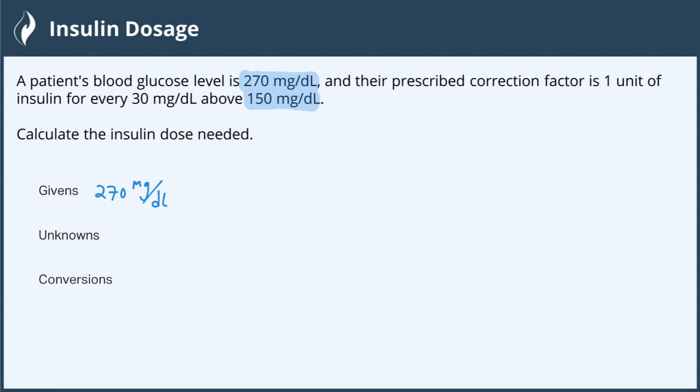So here, we have to figure out how much above 150 milligrams per deciliter our 270 is. So we subtract that from 270 to find the given amount that is above, and we're going to get 120 as our adjusted value.